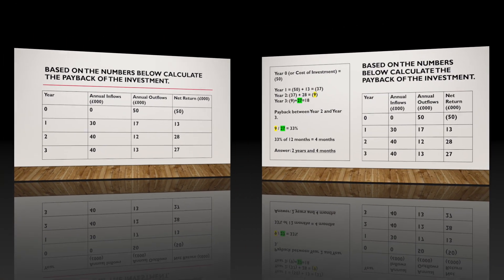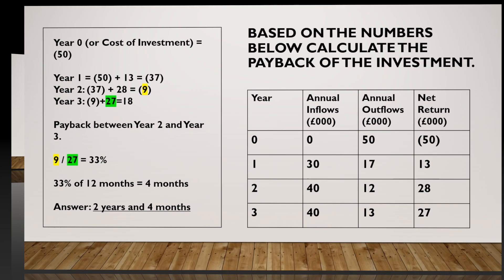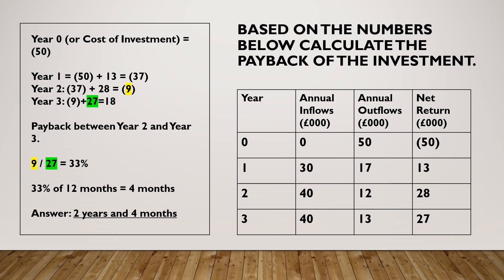So here are the answers. Payback is about how quickly you can pay back the cost of the investment. The way to work out the cost of the investment is to look at the net return in Year 0. You can see it's in brackets, which means it's negative — so it's negative 50, and just above you'll see 'thousands', so it's negative £50,000.